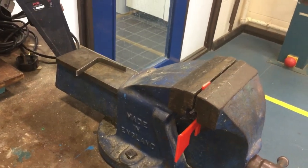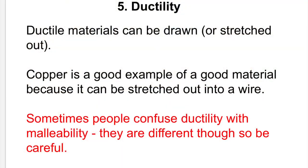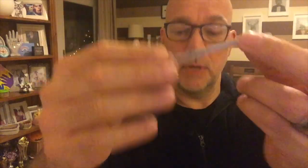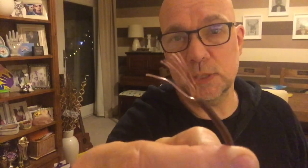Property number five is ductility — ductile materials can be drawn or stretched out. Copper is ductile, which is why it can be stretched out into wires. Think about blue tack: we can stretch it out and it gets longer and thinner. It's the same principle as copper wire — this is why we can achieve really thin but really long pieces of copper to make wiring, because it's ductile.